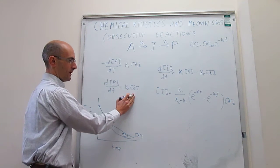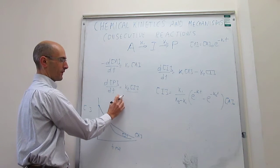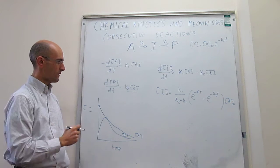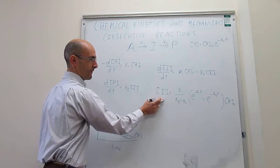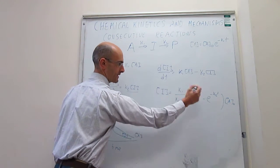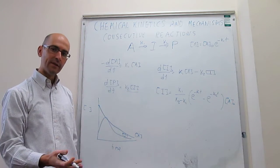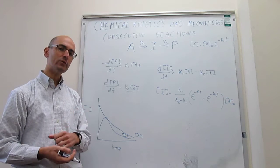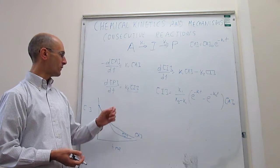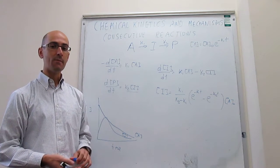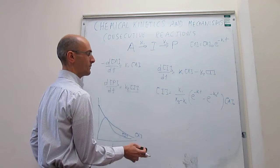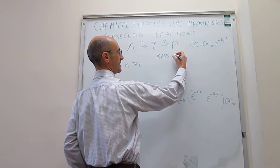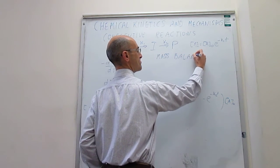For the concentration of products, the rate law is d[P]/dt equals K2 times [I], since only one reaction generates products. We already have the expression for [I], so we could plug it in and carry out the integration. However, there is another trick that avoids integration: using the mass balance of the reaction. Notice that we have the concentration of A and the concentration of I.